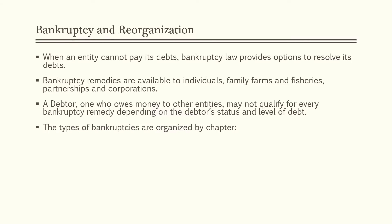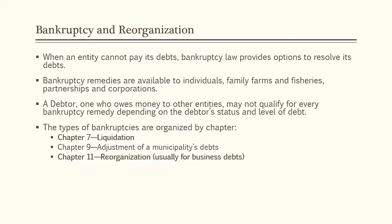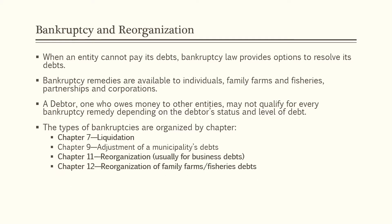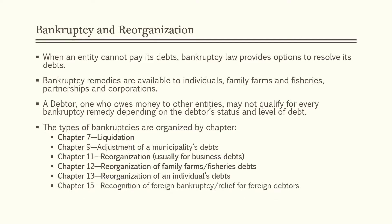The types of bankruptcies are organized by chapter. Chapter 7 is Liquidation — the most common bankruptcy. Chapter 9 is an adjustment of a municipality's debts, which we will not cover. Chapter 11 is Reorganization, usually for business debts; big companies like the airlines have often used this. Chapter 12 covers Reorganization of Family Farm or Fisheries Debt. Chapter 13 covers Reorganization of an Individual's Debt. Chapter 15 covers Recognition of Foreign Bankruptcy and Relief for Foreign Debtors, which we will also not cover.